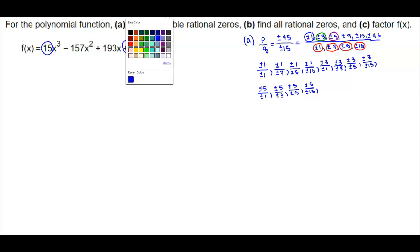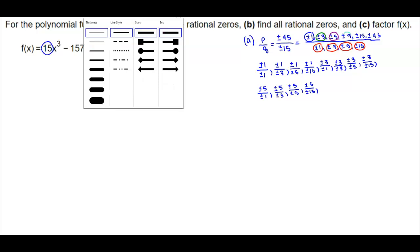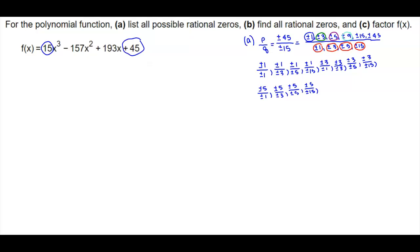Now we're going to take a look at plus or minus 9. So we have plus or minus 9 divided by plus or minus 1, plus or minus 9 divided by plus or minus 5, and plus or minus 9 divided by plus or minus 15.